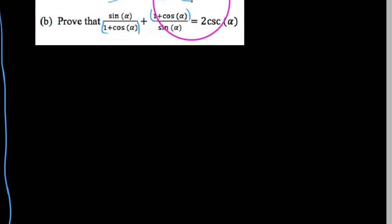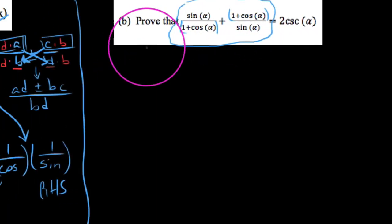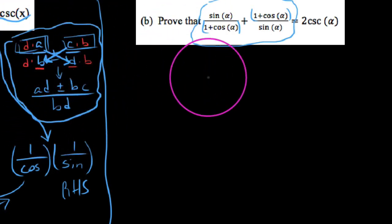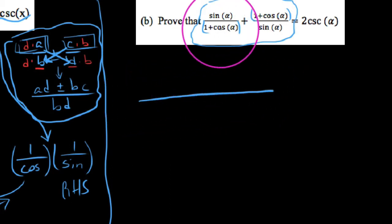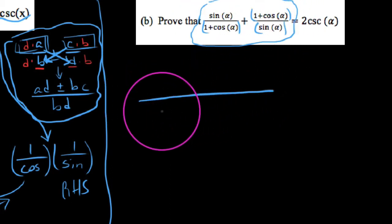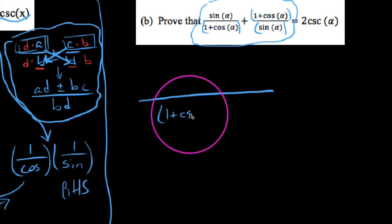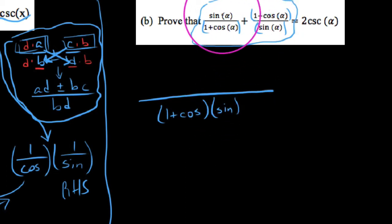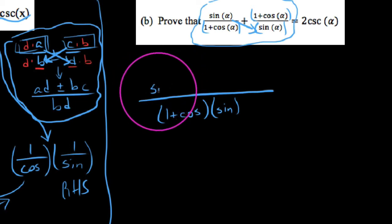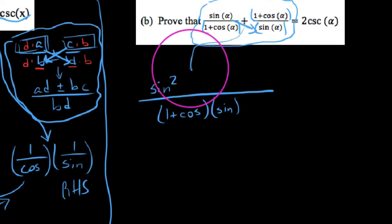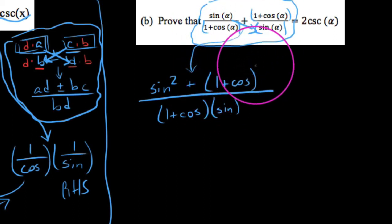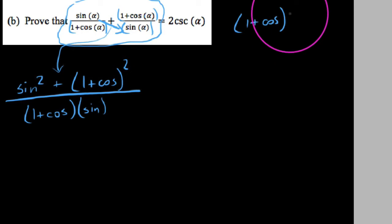Working with the left-hand side because it's the more complicated of the two sides, we need to find a common denominator. Using our method, the common denominator is the product of the two existing denominators: 1 plus cosine times sine. On top, sine times sine gives us sine squared, plus 1 plus cosine times 1 plus cosine — which is the entire quantity 1 plus cosine, squared. It's important to recall that in algebra, 1 plus cosine squared is not equal to 1 squared plus cosine squared — you actually have to FOIL it out.